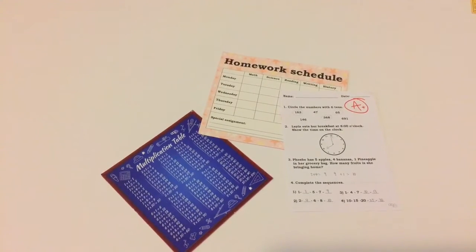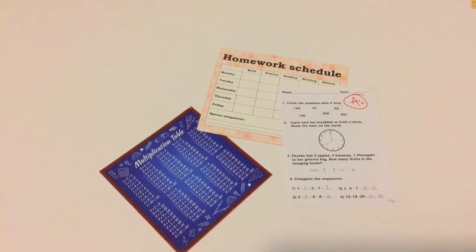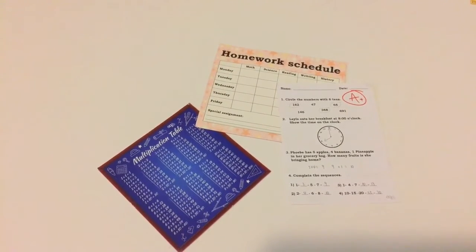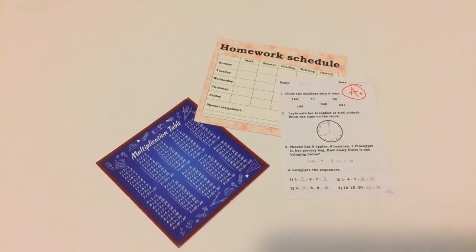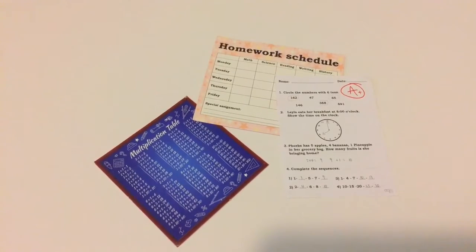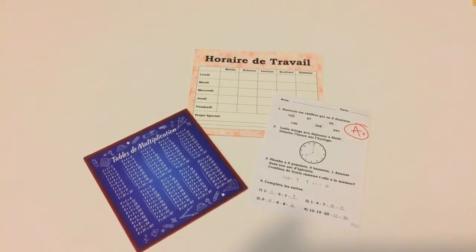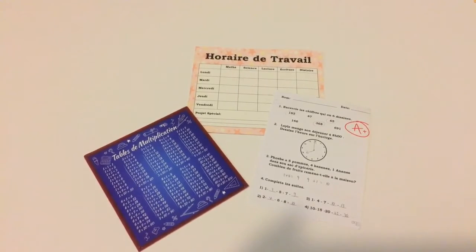The next three items we have here is a multiplication table paper, homework schedule, and a graded paper. So your doll is ready to go to school. And just as before, the back is in Spanish.